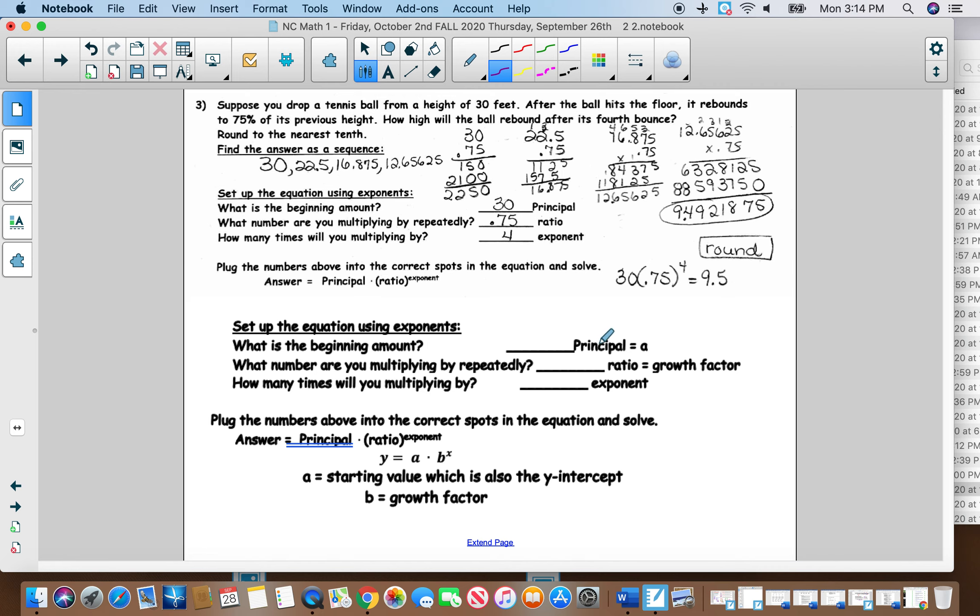And the other two, the principle, again, is the starting amount. So the starting amount is 30. And then it rebounds to 75%. That's going to be this number right here, which is also considered in this particular problem. It's not the growth factor. It is the decay factor. So you either have a growth factor or a decay factor. Since this one's getting smaller, it's going to be the decay factor. How many times will you multiply it? That's by the exponent, and it's doing the fourth time. So that would be 4.